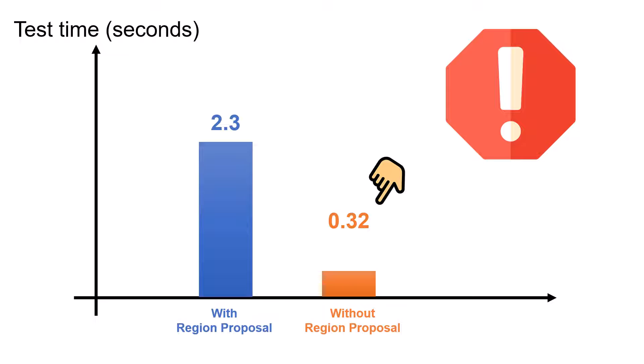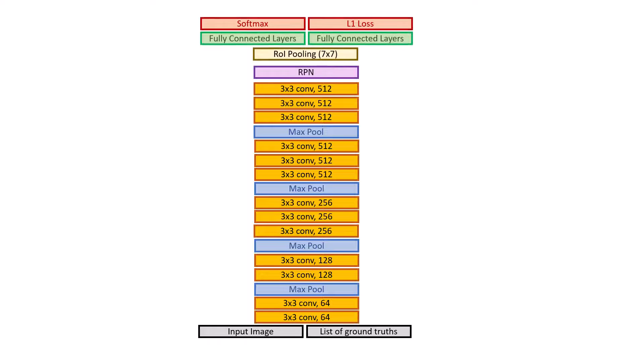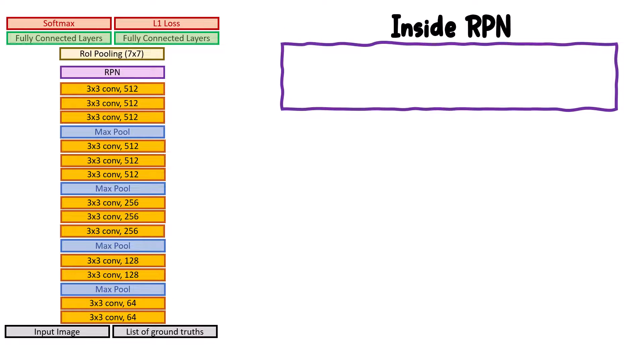To mitigate the problem, we can remove the selective search and instead add a CNN module called RPN, which basically does the same thing. Now let's see what's inside the RPN.